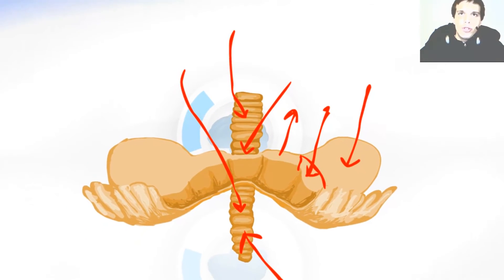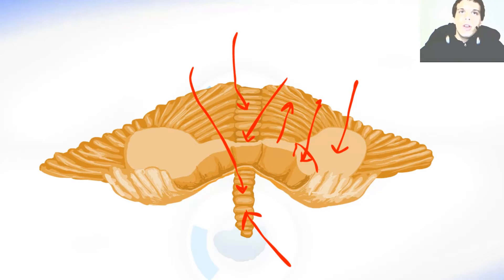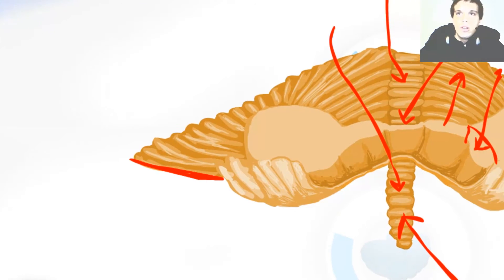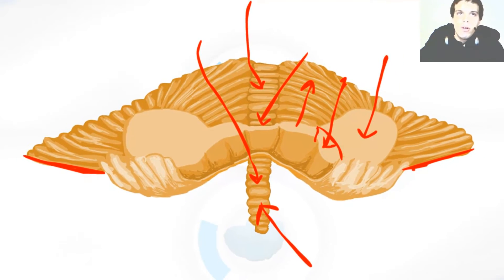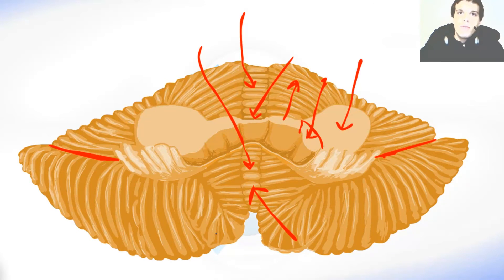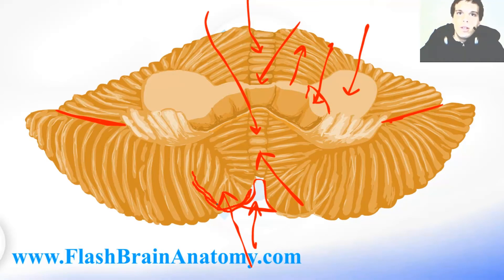Beside the vermis, there are also two hemispheres — the left one and the right one. These are the parts of the hemispheres above the horizontal fissure, and this over here is the horizontal fissure. We also have parts of the hemisphere below the horizontal fissure. On these parts of the hemisphere we can notice the tonsilla here and the vallecula over here. The vallecula is just this space over here. This border was called the pyramid of the vermis, and the lateral borders are the tonsilla of the cerebellum.